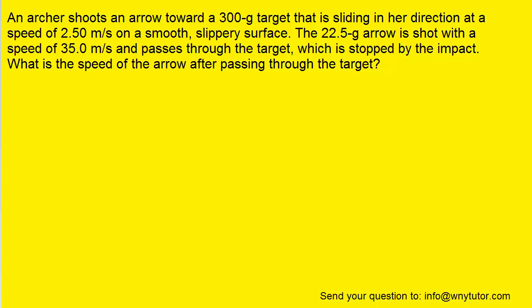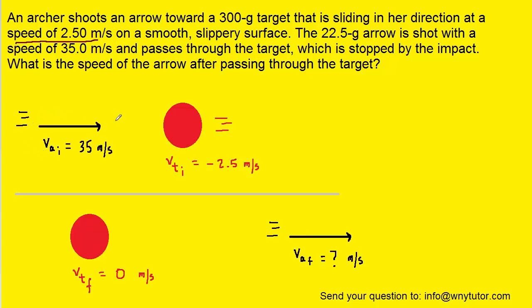We can begin this question by drawing a picture. So we have an arrow that is initially moving to the right with a velocity of 35 meters per second.